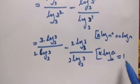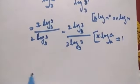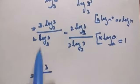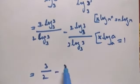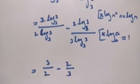Since log 3 to the base 3 equals 1, we have 3 times 1 by 2 times 1, minus 2 times 1 by 3 times 1. This simplifies to 3 by 2 minus 2 by 3.